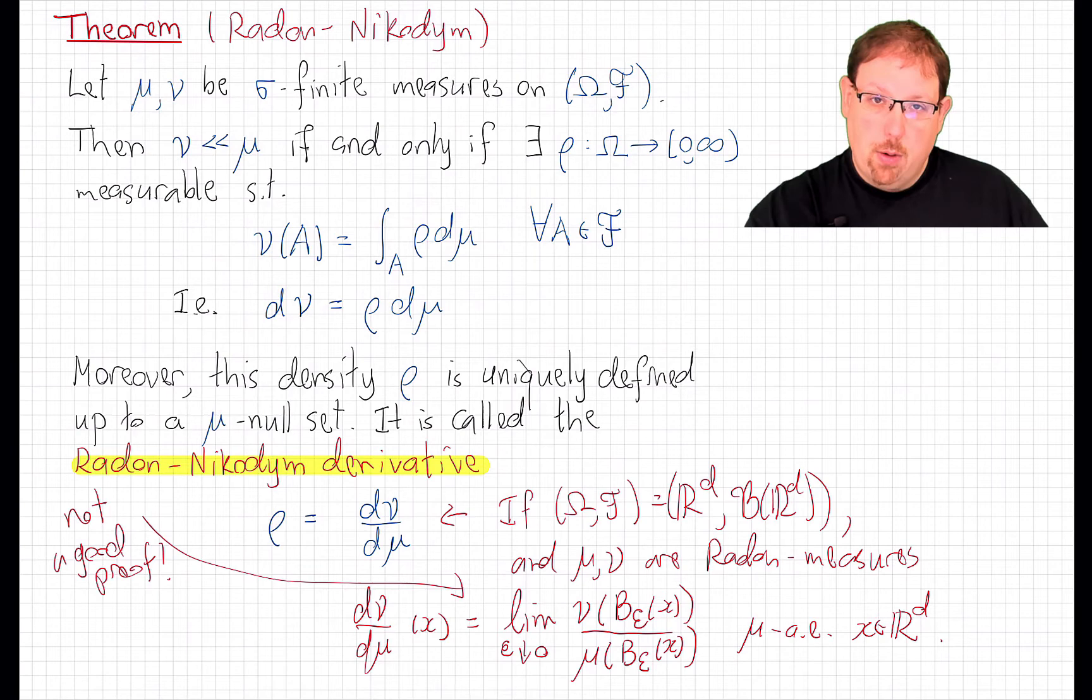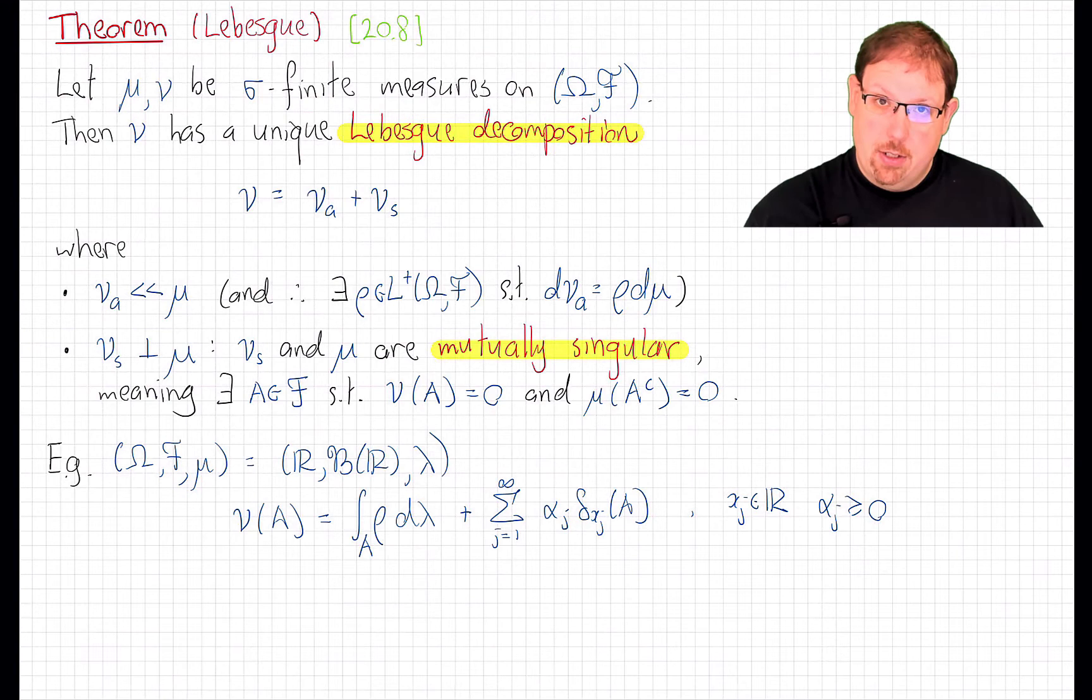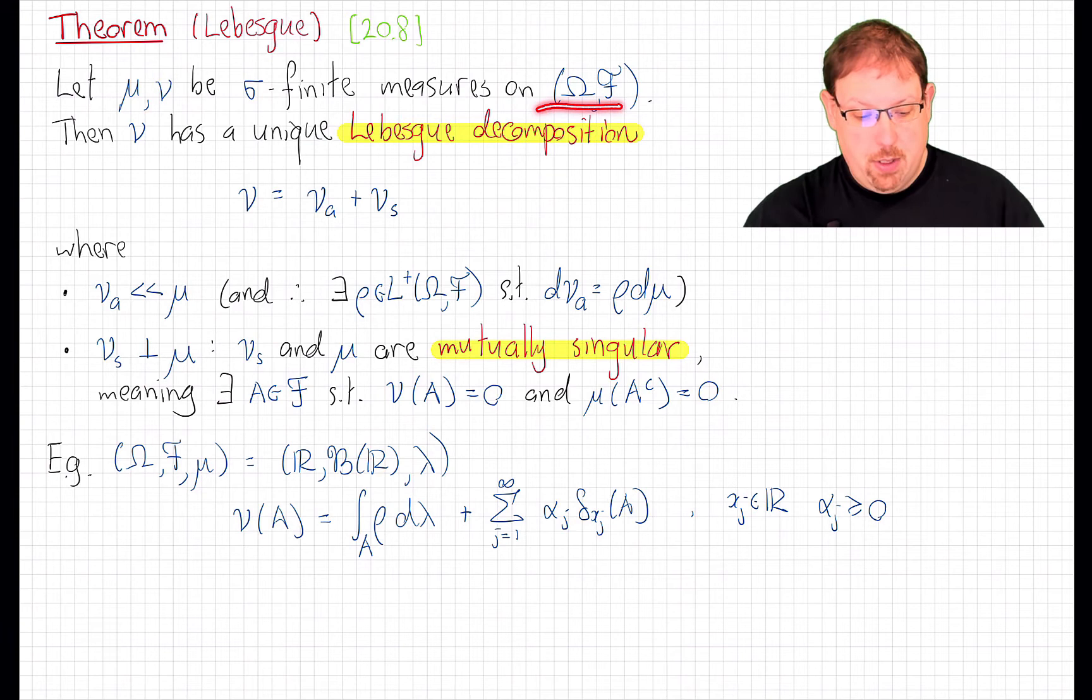Now let's go a little bit further in fact. Suppose that nu is not absolutely continuous with respect to mu. This theorem will tell us that nu does not have a density with respect to mu. But does that mean that it's just totally singular with respect to mu? Well, we can actually be very precise about what that means. So here is an extension of the Radon-Nikodym theorem. It's actually often called still the Radon-Nikodym theorem, although this particular extension was proved by Lebesgue. Again, in the same setting, suppose I have two measures, mu and nu, that are sigma finite on a measurable space. Then either one of them has what's called a Lebesgue decomposition with respect to the other.